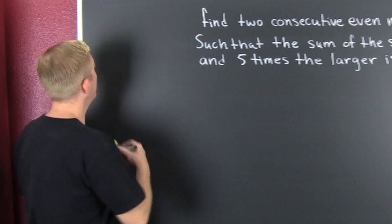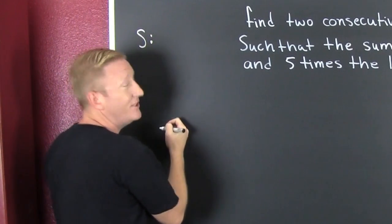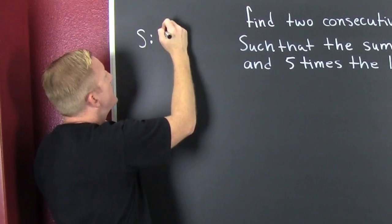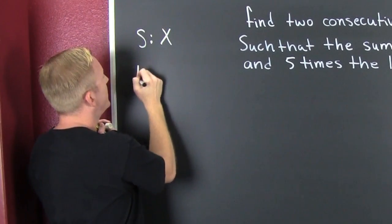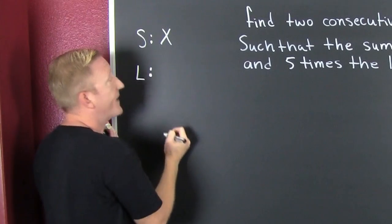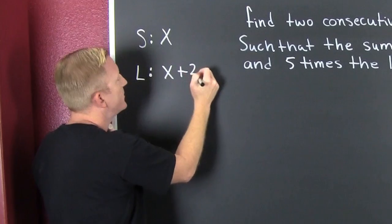So, we're going to have two even numbers here. One of them is going to be the smaller. You don't know what it is. Let's call it x. What's next? Let's get the next even number. Let's just call that the larger. How are we going to get there? We're going to add 2. This is x plus 2.